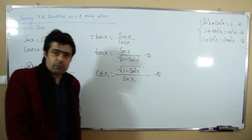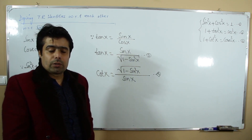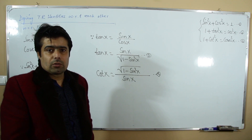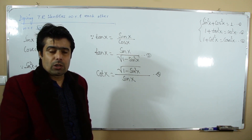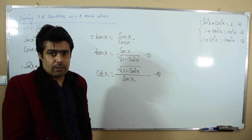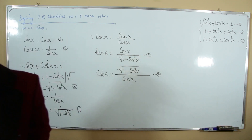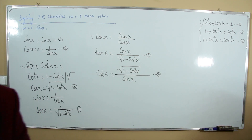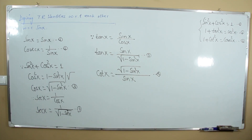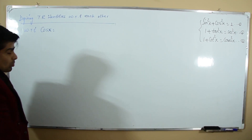Now we will prove six relations with respect to cosine, then with respect to tangent, cotangent, secant, and up to cosecant. With respect to cosine: first, you define cosine.